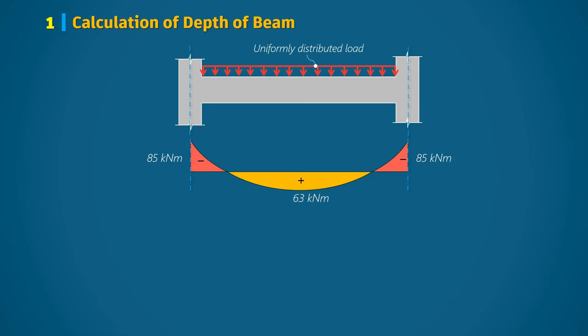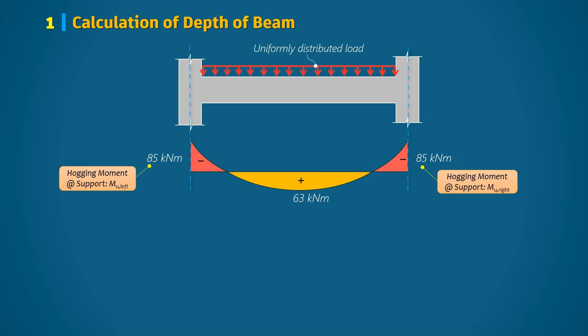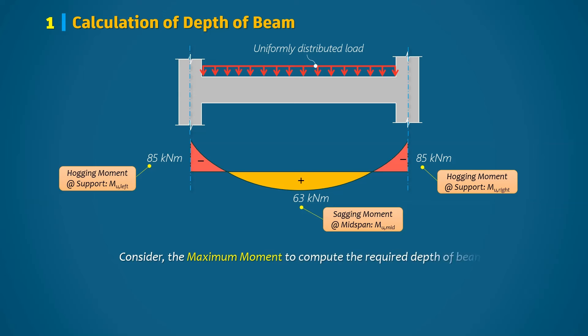Let us start with Step 1: calculation of the depth of the beam. The required depth will be calculated based on the maximum bending moment acting on it. In this example, a hogging bending moment of 85 kilo-newton meter occurs at the support, while a sagging bending moment of 63 kilo-newton meter occurs at the mid span. Therefore we consider the larger of these two moments, which is 85 kilo-newton meter.